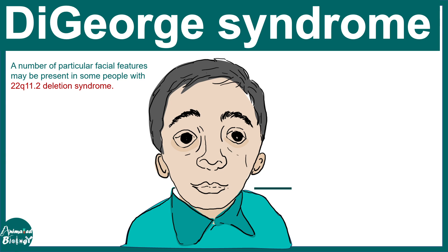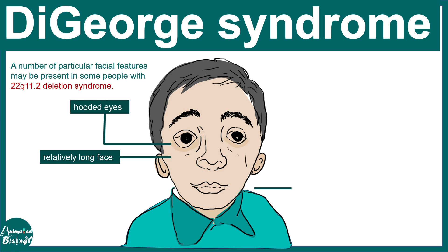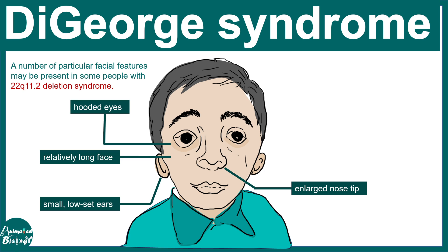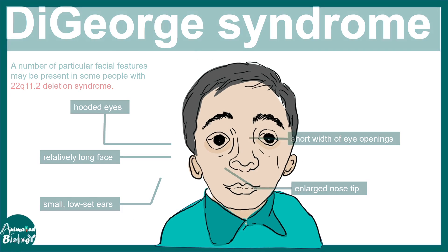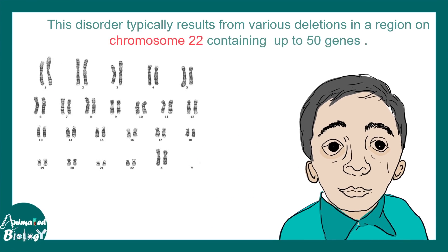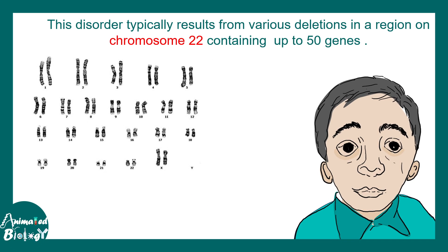There are a number of facial features that are defective in these individuals. These include hooded eyes, a relatively long face, small and low-set ears, enlarged nose tips, and short width of the eye opening, among others.